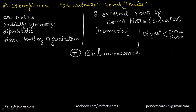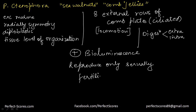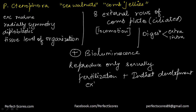Sexes are not separate in ctenophores, so they are basically hermaphrodites. Reproduction is only by sexual means. Fertilization is external and there is no direct development — it's indirect. Some examples are Ctenoplana and Pleurobrachia.